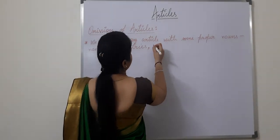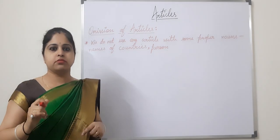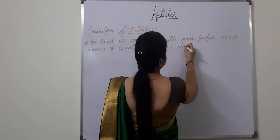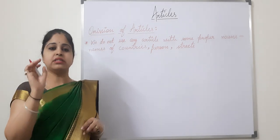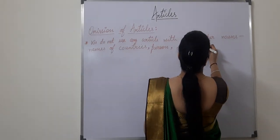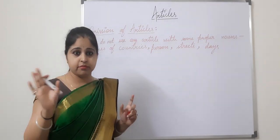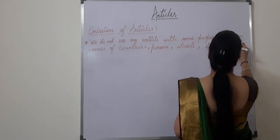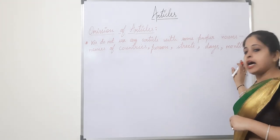Next: we do not use 'the' before names of persons — not 'the Raju' or 'the Sita'. We also do not use 'the' before names of streets, names of days — not 'the Monday' or 'the Tuesday' — and names of months. Months of the year do not carry articles with them.